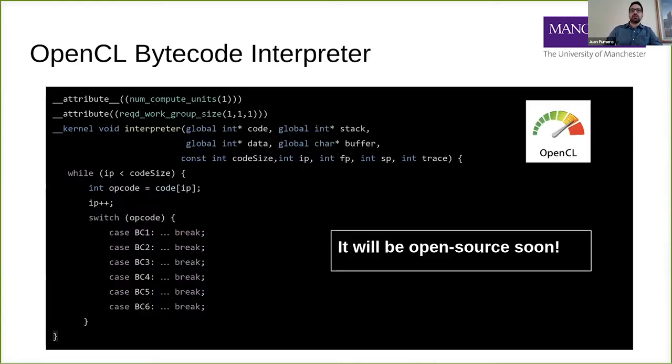To give you an idea how the interpreter looks like, this is OpenCL code, a sketch of the actual interpreter. It will be open source soon. I need time to clean up and put some documentation. There is practically no documentation now, but it will be available. Feel free to ask me if you want to see it before that. It's basically a pretty simple while loop. Then we get the bytecode and we have a very large switch statement for execution of the bytecode.